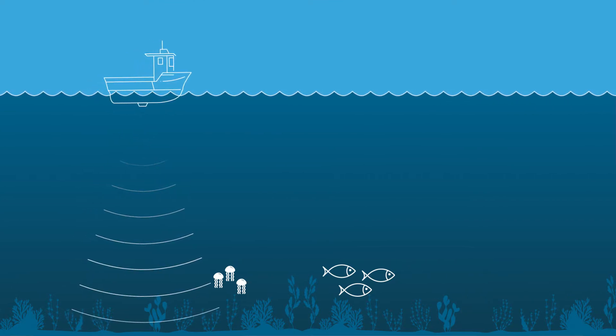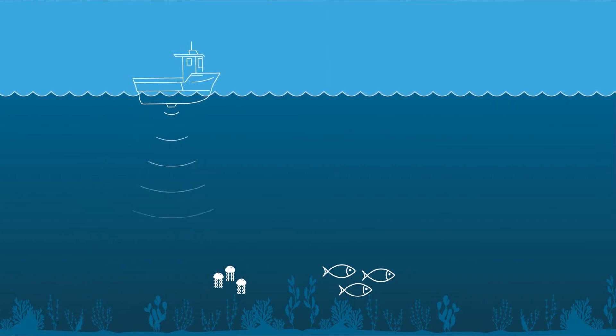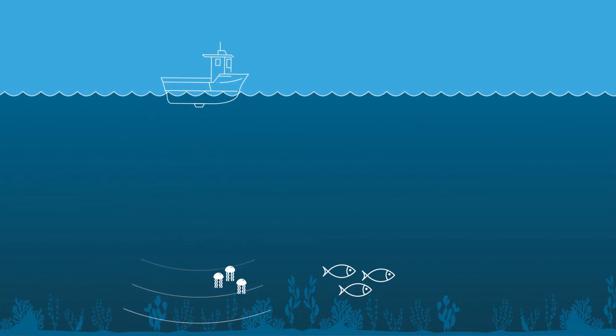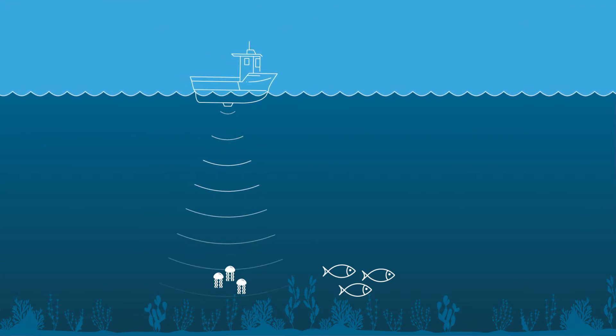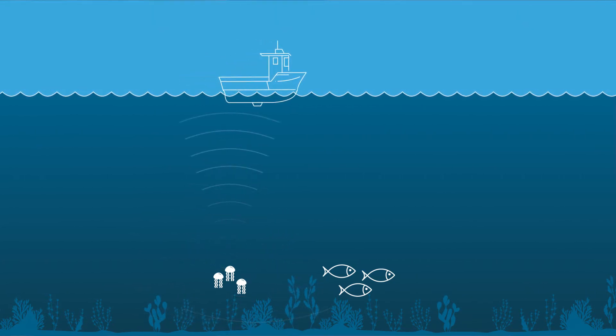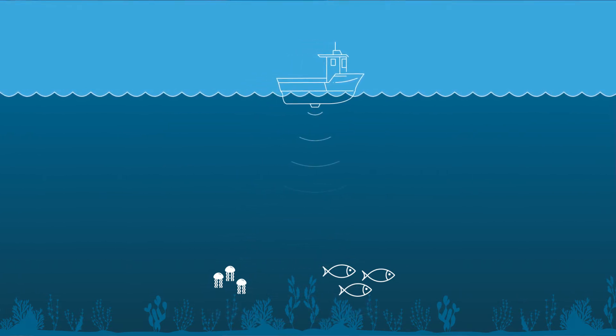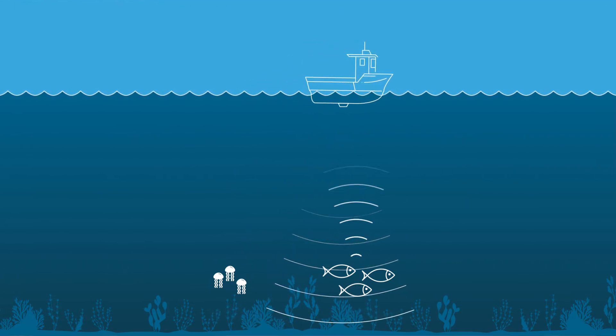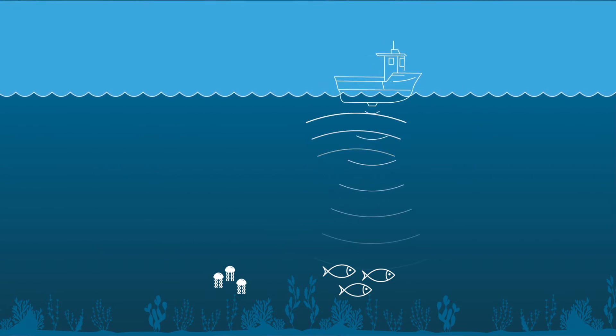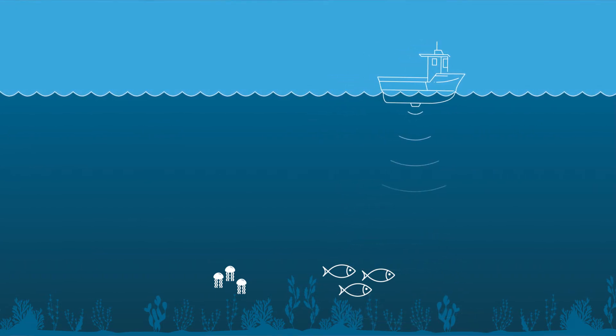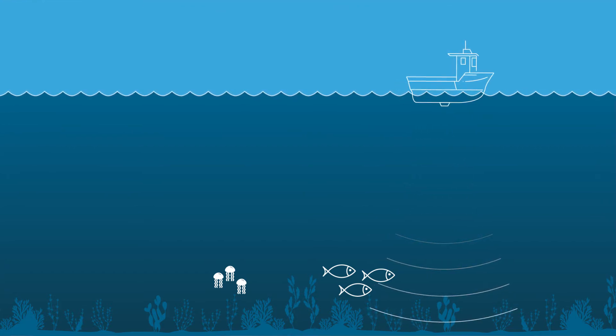If we think about organisms bouncing back sound to the boat, how much sound they bounce back really is dependent on what they're made out of. So a jellyfish that's made out of mostly water doesn't bounce back very much sound. But a fish that's made out of hard scales and has an air bladder in there is going to bounce back a lot of sound. So we can tell the difference between those two organisms based on how much sound is reflected back to the boat.